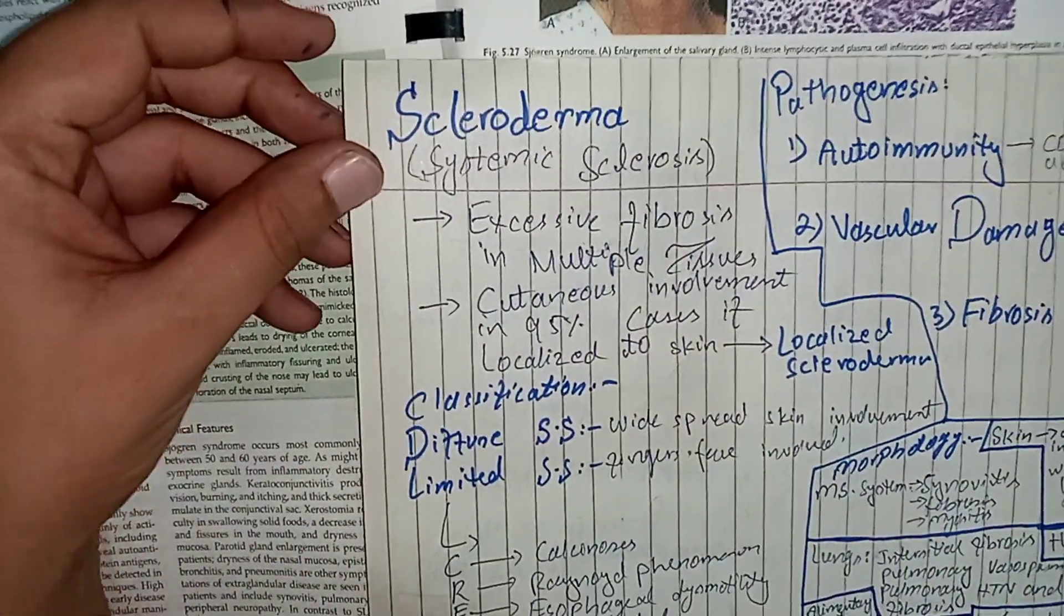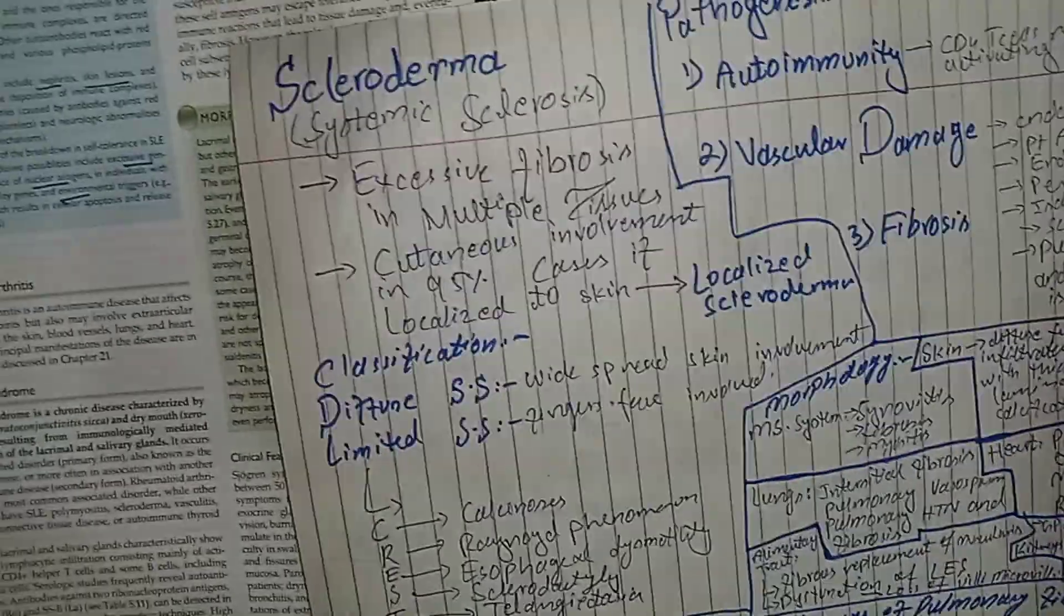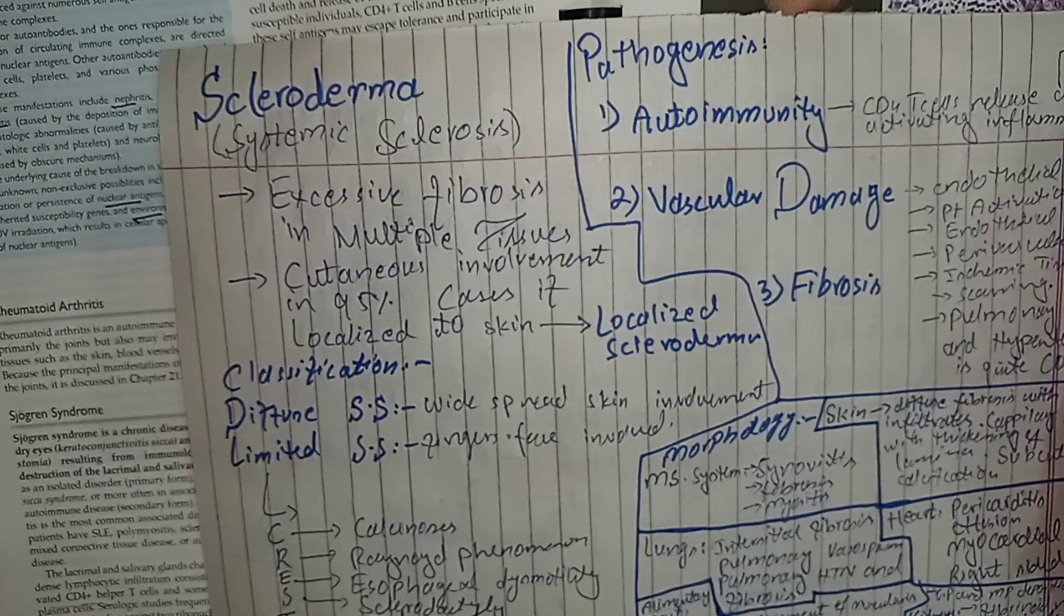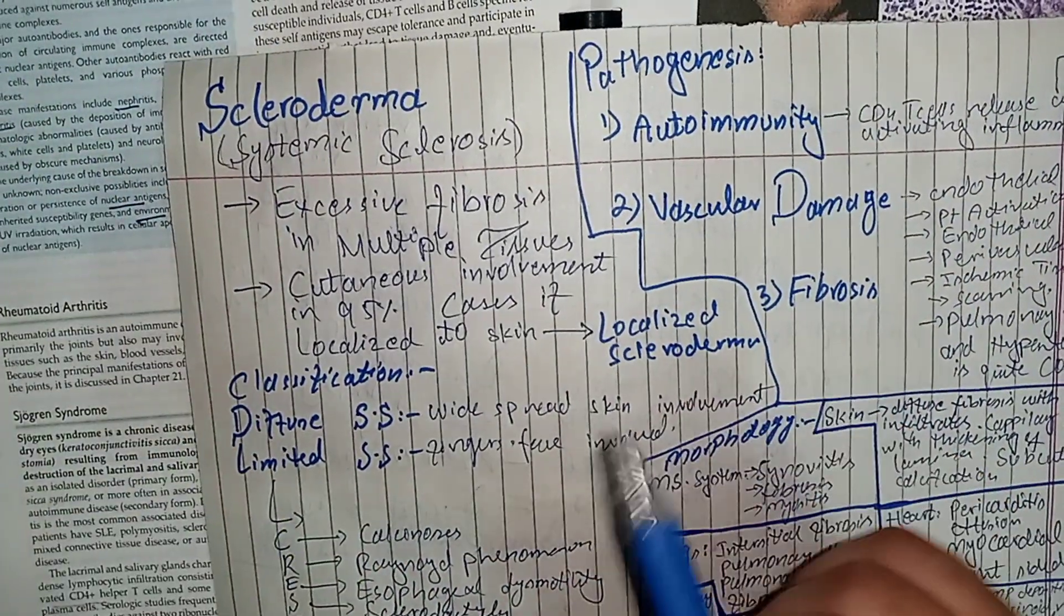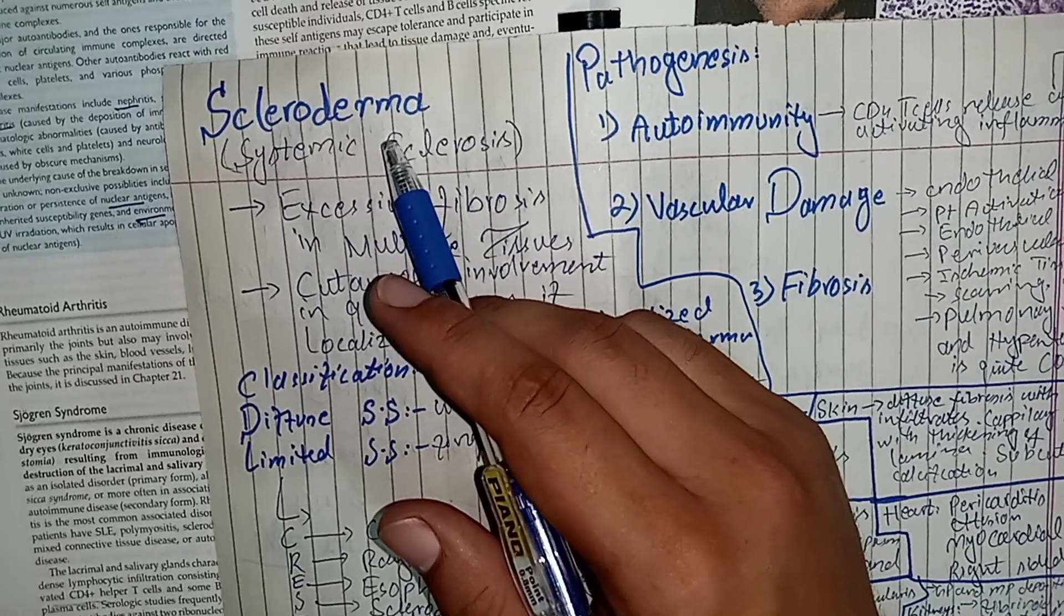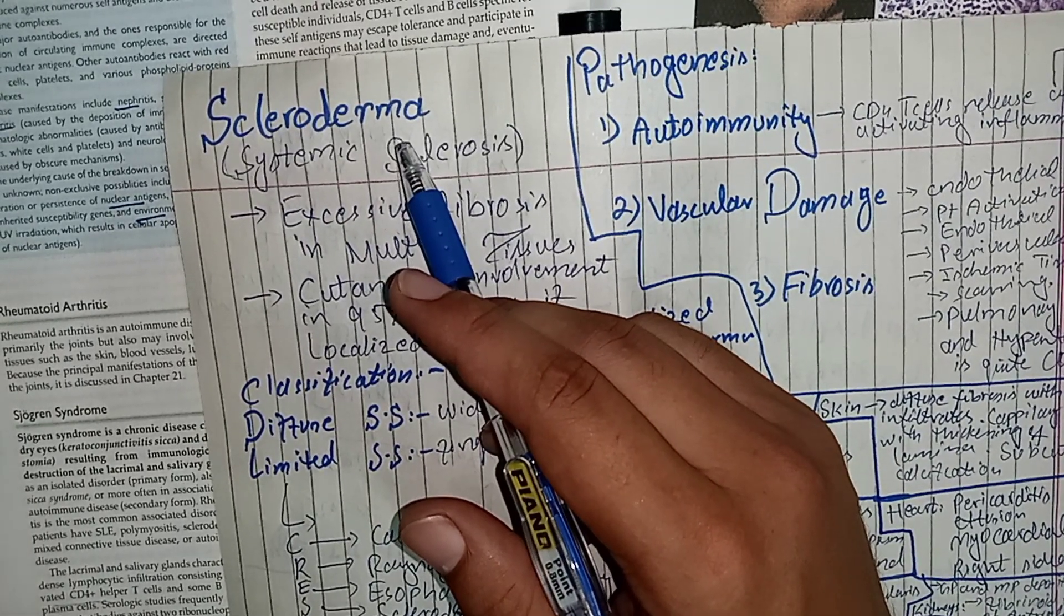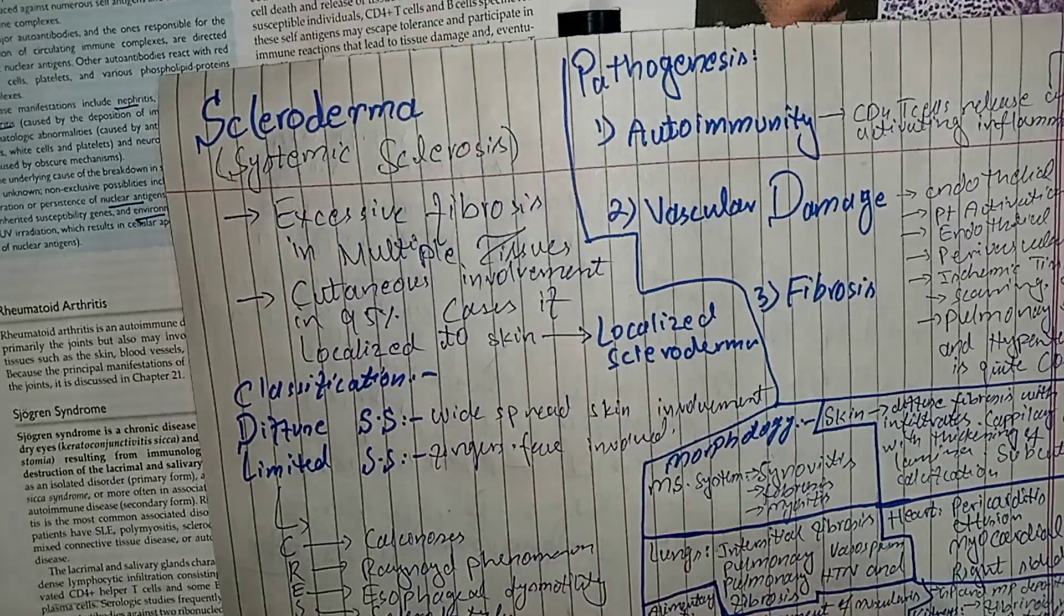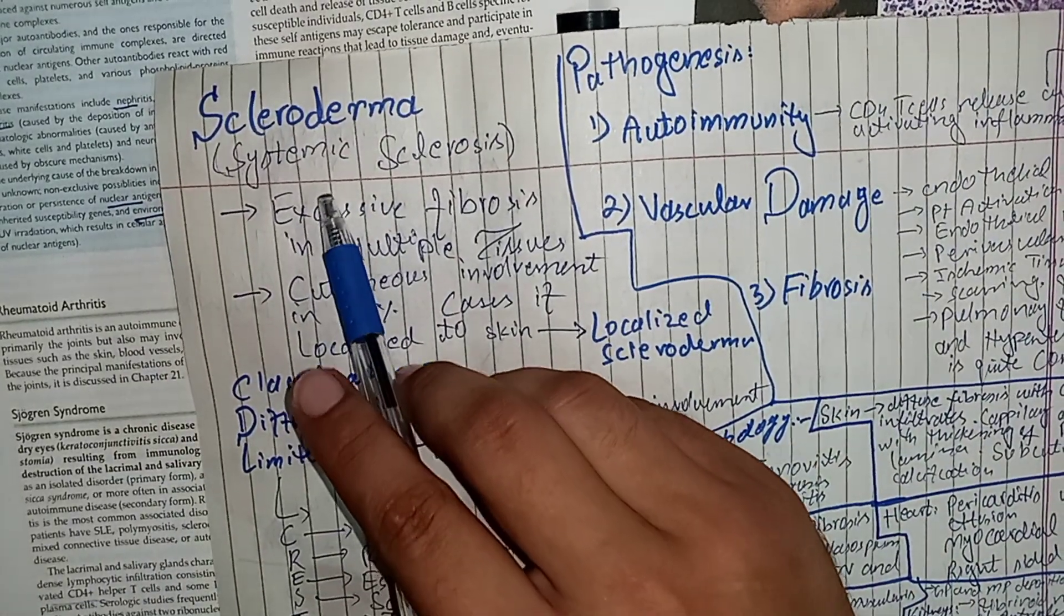So what is Scleroderma or systemic sclerosis? It is basically deposition of collagen in multiple body tissues and it is an abnormal phenomenon. Why it is called Scleroderma? It is called Scleroderma because in this disease there is always a prominent involvement of the skin. However, this term is misleading as other body tissues and multiple body organs are involved in this disease. So its preferred name is systemic sclerosis.